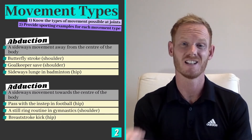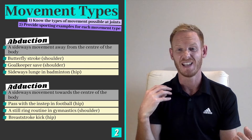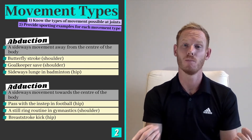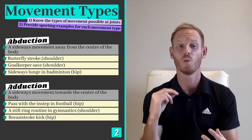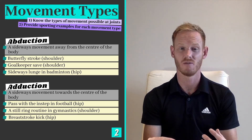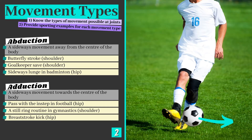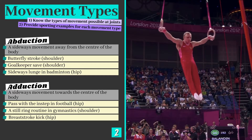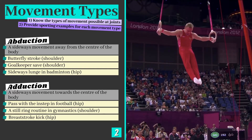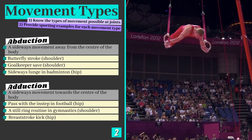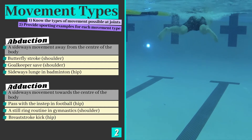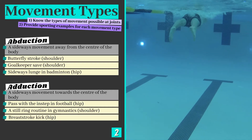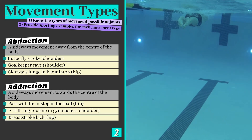The opposite movement is adduction, which can easily be remembered as adding a body part back to the body. It's a sideways movement towards the centre of the body, and can be seen in football when passing with the instep, when pulling the arms inwards to raise the body up during a ring routine in gymnastics, and at the hip joint when bringing the legs together during the kick phase of breaststroke in swimming.